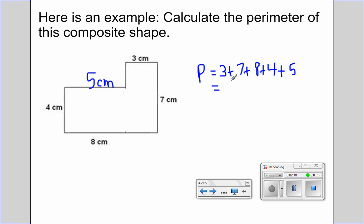3 plus 7 is 10, plus 8 is 18, plus 4 is 22, plus 5 is 27. And because it's perimeter, I don't need any square units.